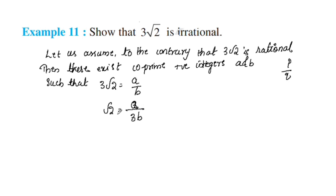What is the question? We have to prove that √2 is irrational. What is the assumption? We assumed that 3√2 is rational — we have to prove it leads to a contradiction.